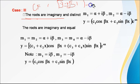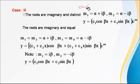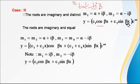For example, root minus 4 means we write plus or minus 2i, since the minus inside gives us i. Now, for the complementary function in case of imaginary roots: if the roots are alpha plus or minus i beta, then the complementary function is y = e^(alpha x) times (c1 cos(beta x) + c2 sin(beta x)), where alpha is the real part and beta is the imaginary part.